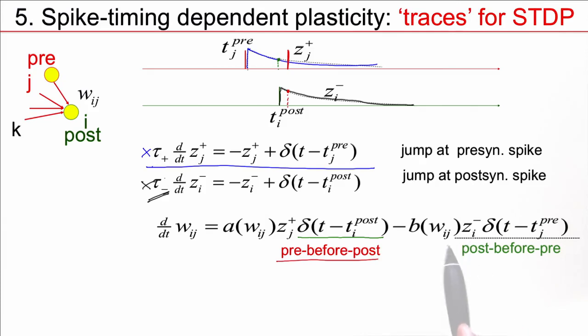So, this term here accounts for the sequence that the postsynaptic spike occurs before the presynaptic one. The change of the weight is proportional to this parameter b, which itself may depend on w, and the total weight change is just the sum of the two. So, how does this account for spike timing dependence?